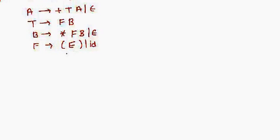We will use the same example we took to calculate the First Set. Here is example number 1. The grammar has: E gives T A, and A gives plus T A or epsilon. Then T gives F B, and B gives star F B or epsilon. Finally, F gives open bracket E close bracket or id. This is our grammar.